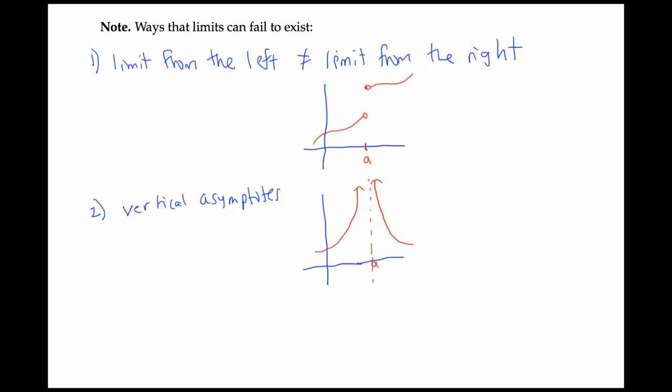There's one other way that limits can fail to exist that comes up sometimes, not quite as frequently, and that's wild behavior. Not a technical term, just a descriptive term. Let's look at an example that has this wild behavior forcing a limit not to exist. And one of the most classic examples is the limit as x goes to 0 of sine pi over x, or sometimes you'll see sine 1 over x.